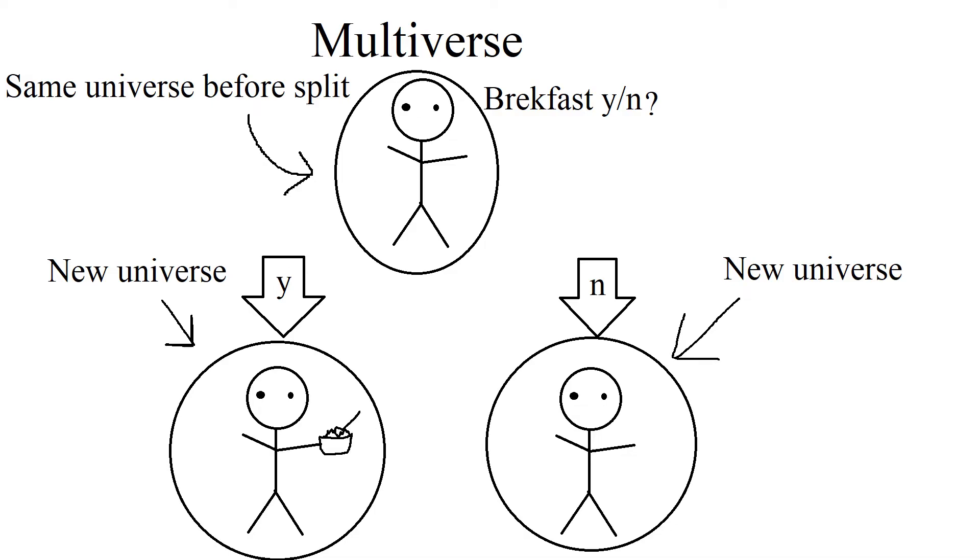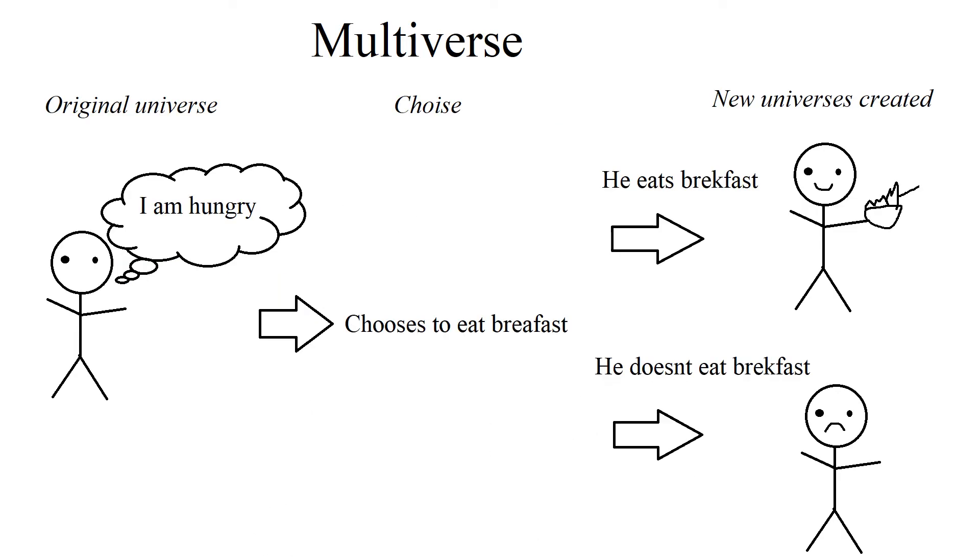The person choosing whether to eat or not eat breakfast is basing his choice on the same information in both universes. Since the person choosing is also identical, we come to a realization.